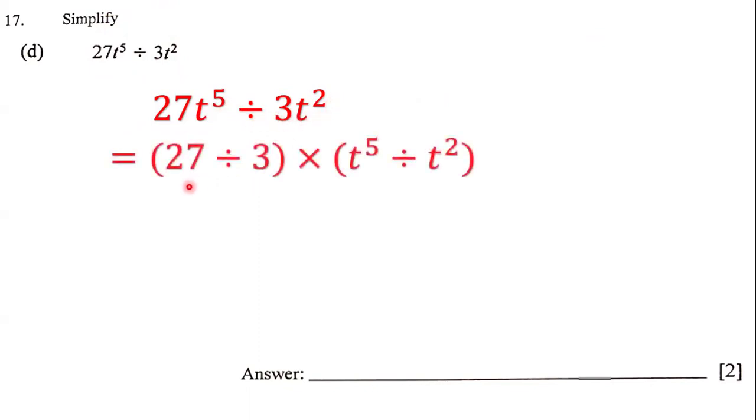First, we are going to group our numbers, and then we are going to group our letters. Notice that we have 27 divided by 3, and 27 divided by 3 is 9.